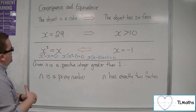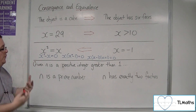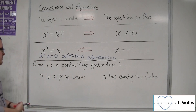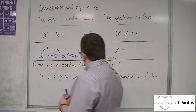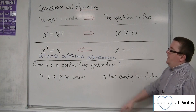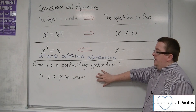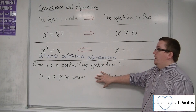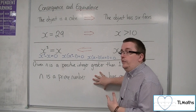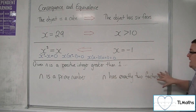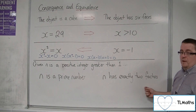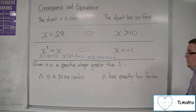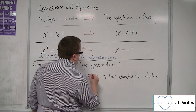Finally, the last example. Given that N is a positive integer greater than 1, we have two statements: 'N is a prime number' and 'N has exactly two factors.' If N is a positive integer greater than 1 and N is a prime number — thinking 2, 3, 5, 7, 11 — then N has exactly two factors, because that is the definition of being a prime number: its only factors are 1 and itself. So the arrow definitely works from left to right.